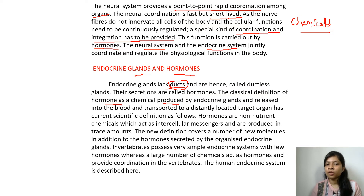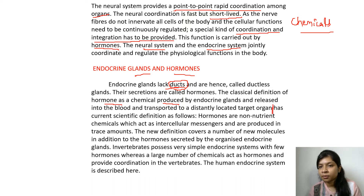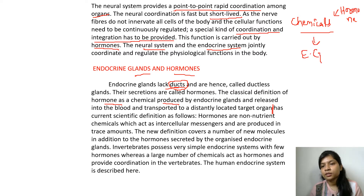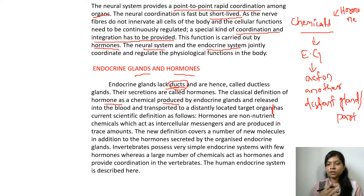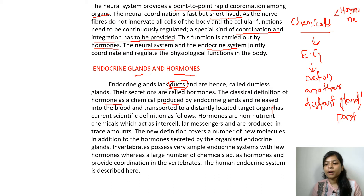Hormones are released into the blood and transported to distantly located target organs. These are chemicals that are formed by the endocrine glands — chemicals which are formed in one gland and act on another distant gland or part of the body. For example, a hormone may be released from the brain but act upon any other part of our body.